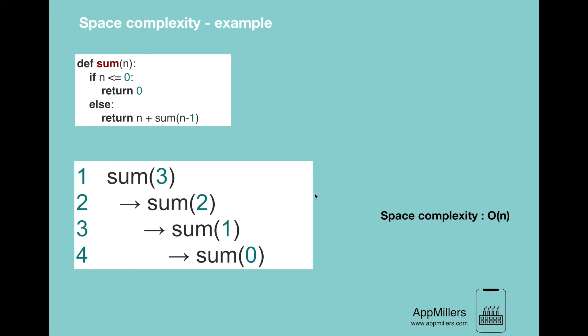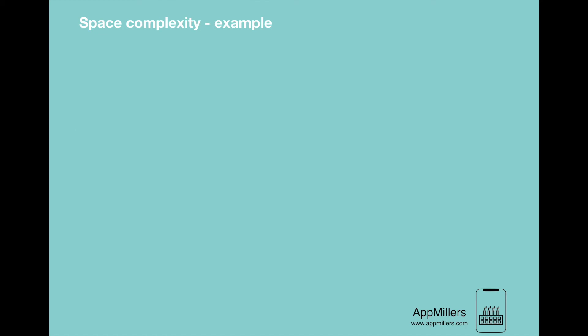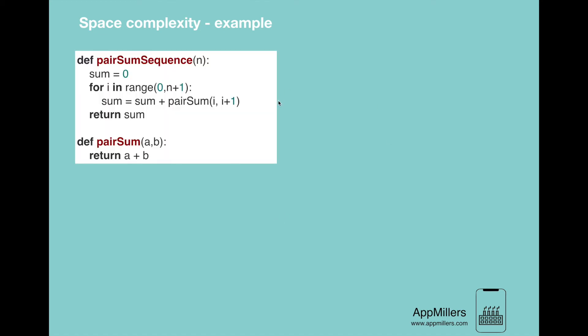On the other hand, there might be some cases that n calls do not require O(n) space. Let's look at the second example. Here we have two different functions. In the second function, we are summing up two numbers. Then for any given number n, we are calling this pair sum function inside a loop.